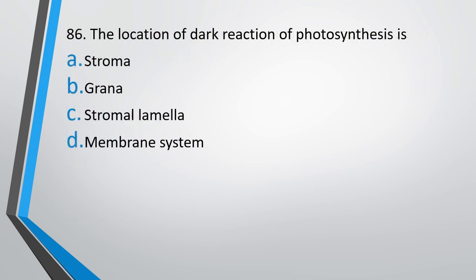Question No. 86: The location of the dark reaction in photosynthesis is stroma, grana, stromal lamella, or membrane system. The correct answer is option A, stroma.